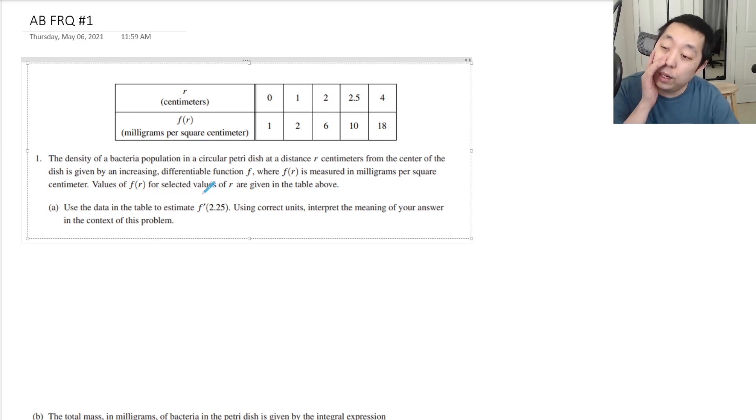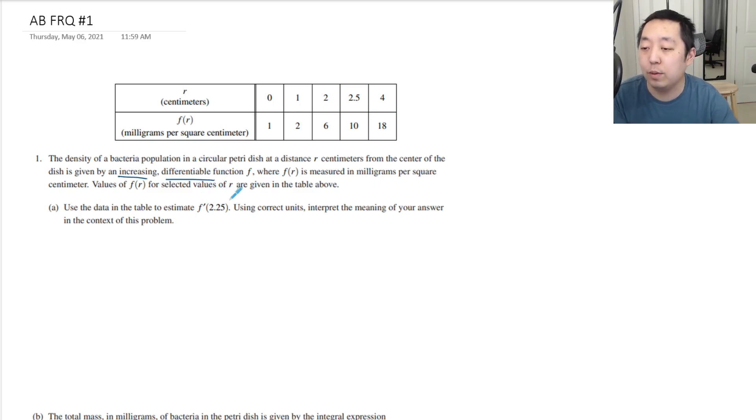So density of bacteria population in a circular petri dish at a distance r centimeters from the center of the dish is given by an increasing differentiable function f, where f of r is measured in milligrams per square centimeter. Values of f of r for the selected values are given in the table above.